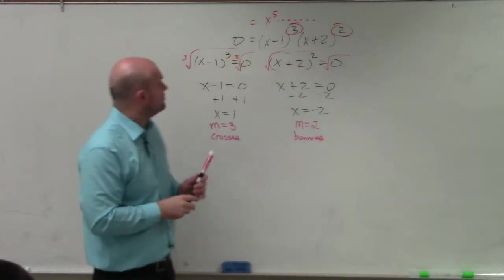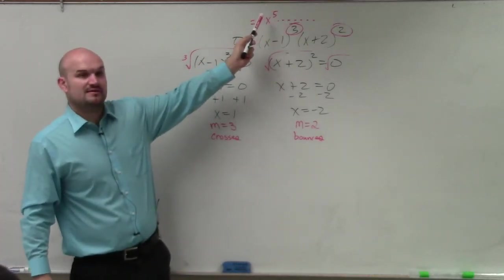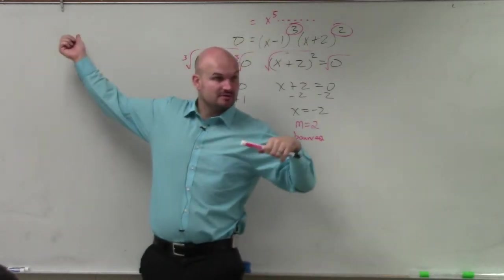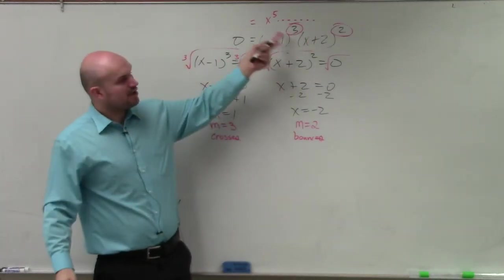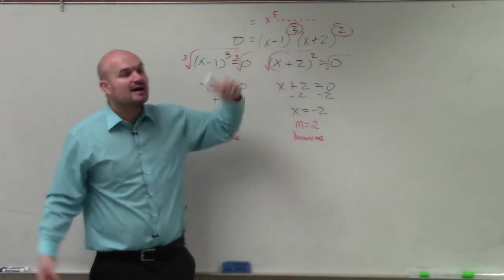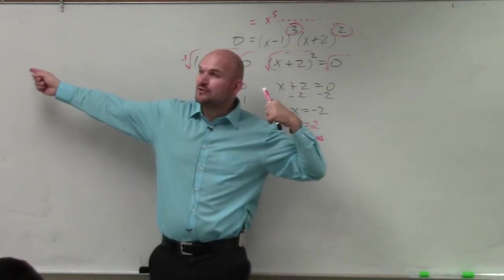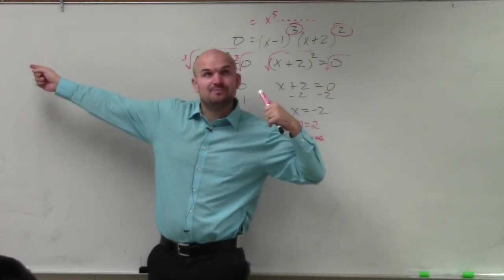So now we know if we multiply this out, we'd have x⁵. Knowing my end behavior, I know that's an odd function. Since these are all positive, the leading coefficient is positive. For x⁵, it's an odd degree with a positive leading coefficient, like the identity function.